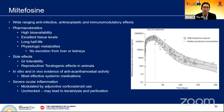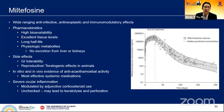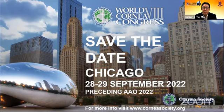Severe ocular inflammation can be modulated with adjunctive corticosteroid use. Unchecked, it may lead to keratolysis and perforation. Interestingly, patients treated with miltefosine for leishmaniasis can also get an idiopathic inflammation of the eye causing significant pain and morbidity — this may be an idiosyncratic response. Finally, I would like to invite you to Chicago for the World Cornea Congress in 2022, immediately preceding the American Academy of Ophthalmology. Thank you very much for your attention.